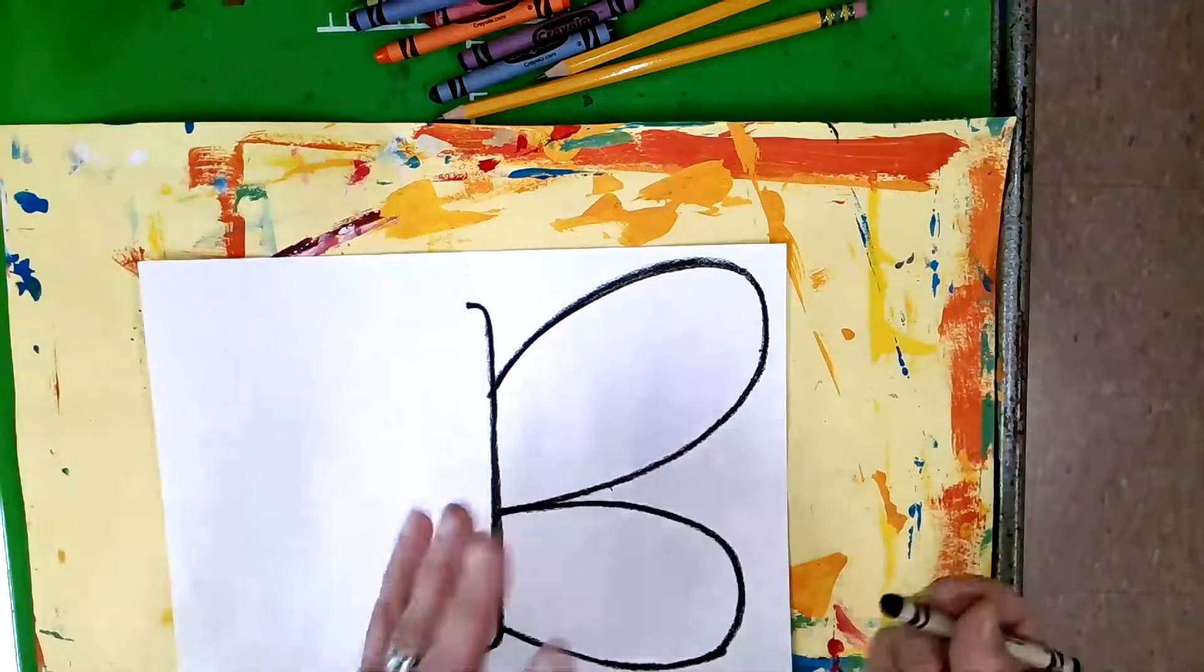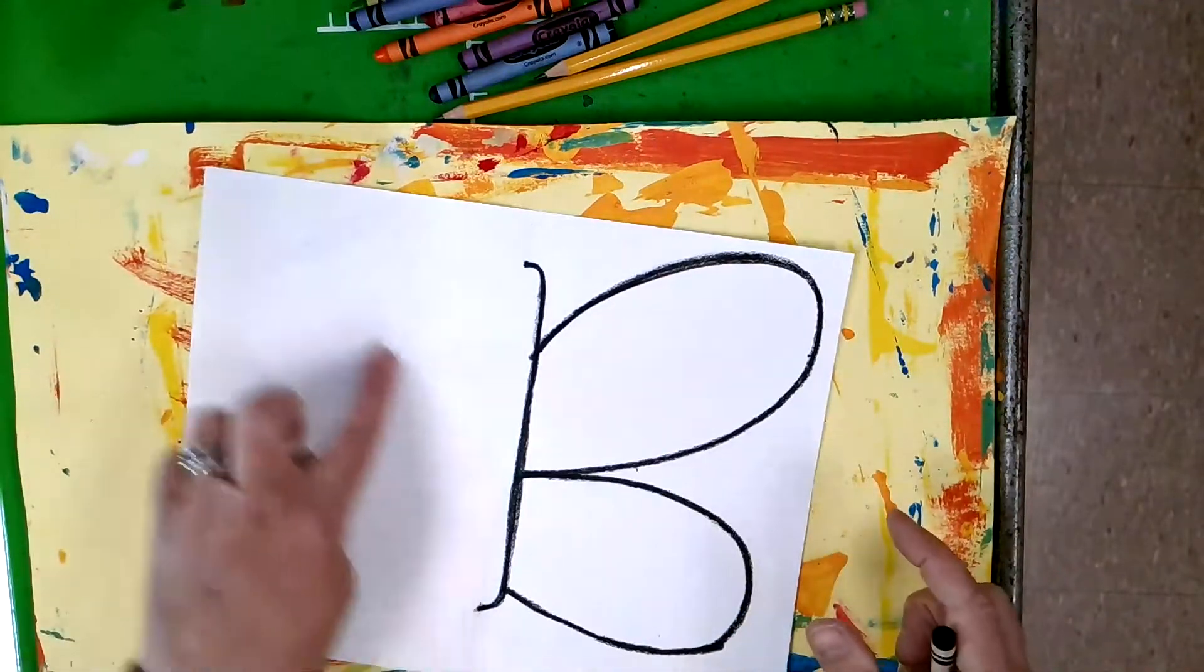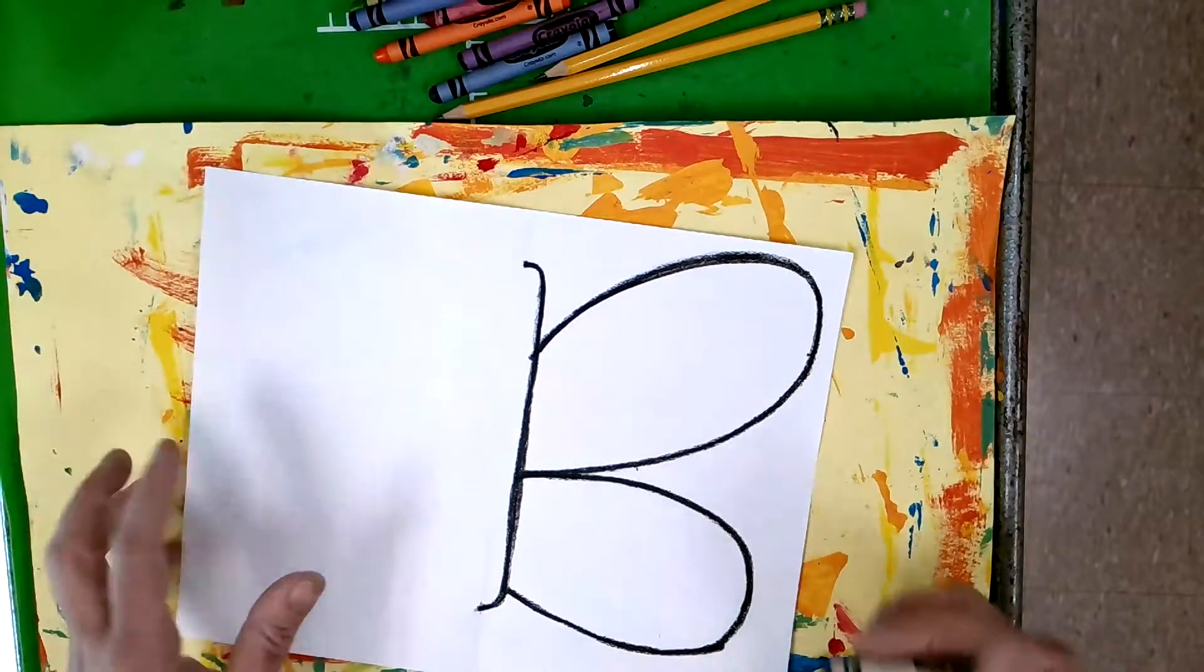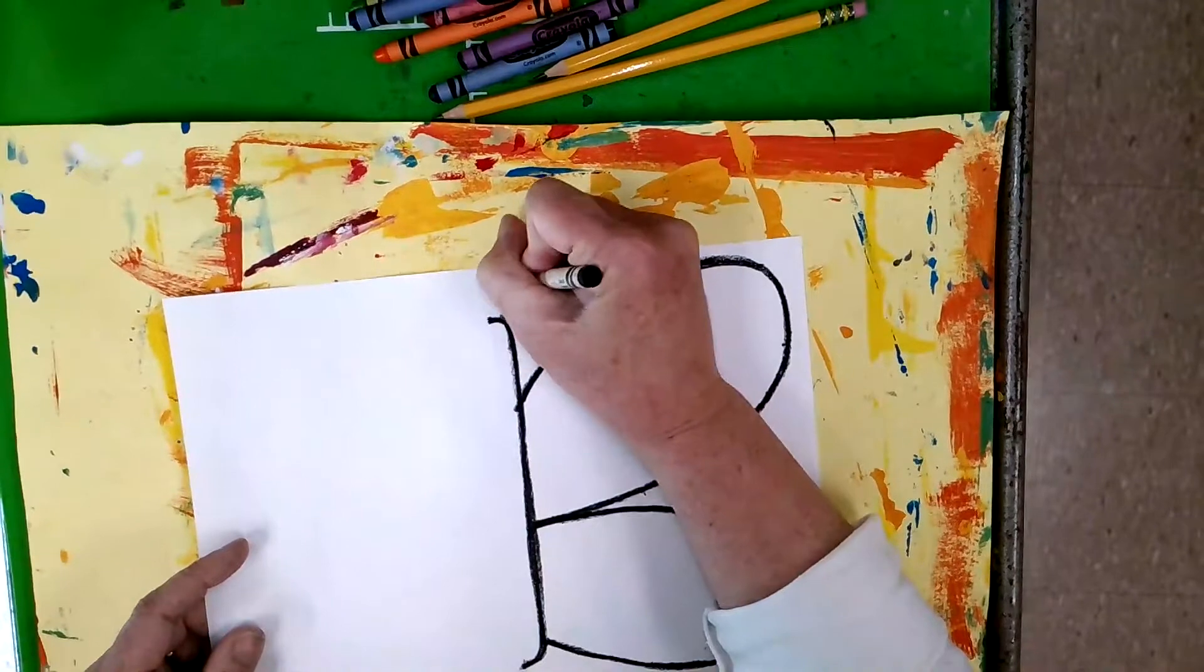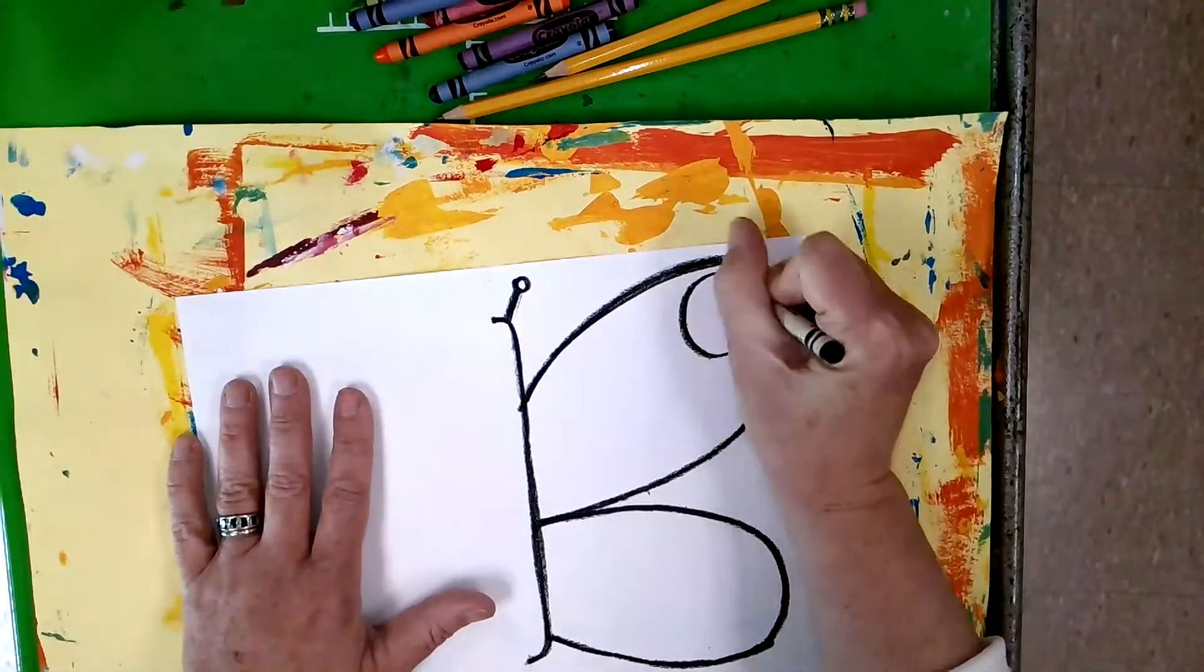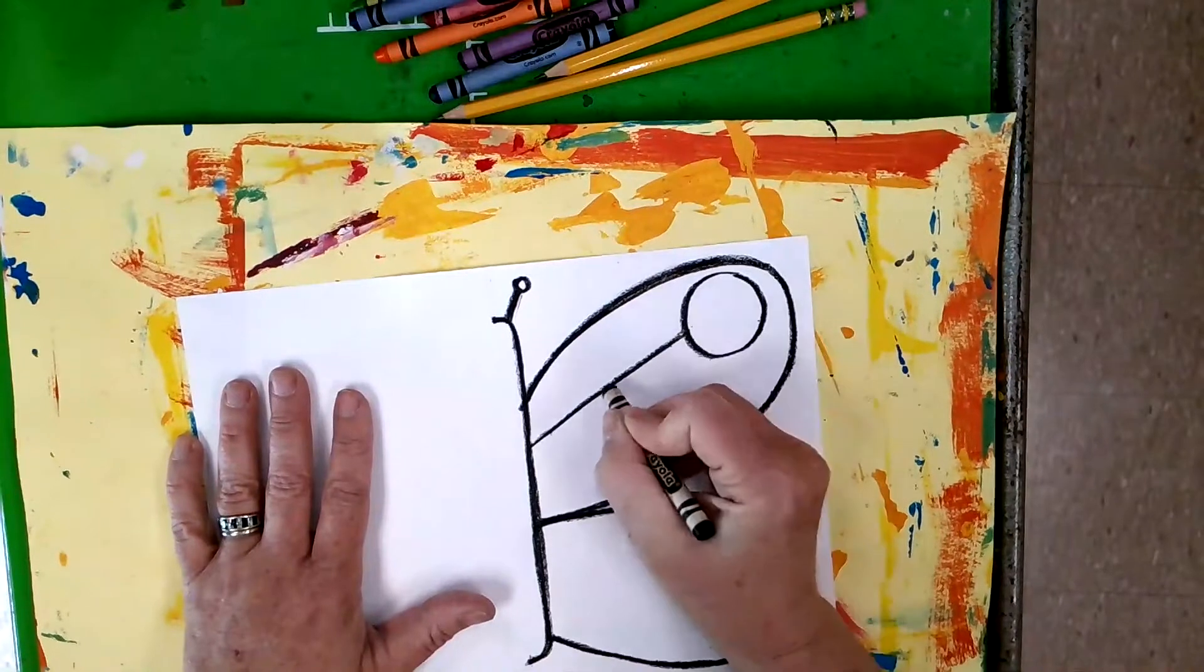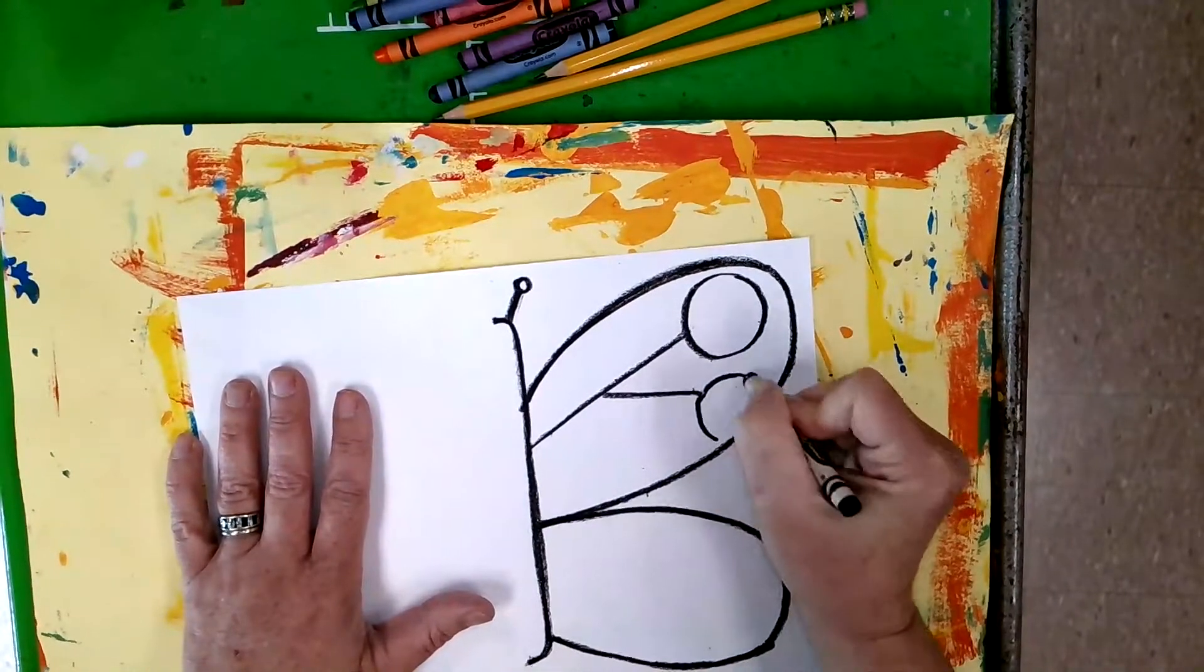One more thing I can do is add a few details to this side. Notice guys I still haven't drawn anything on this side. I'm going to add one antenna, maybe some designs or some details inside the wing.